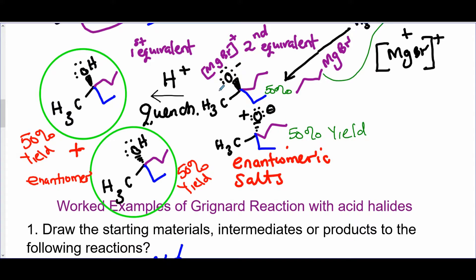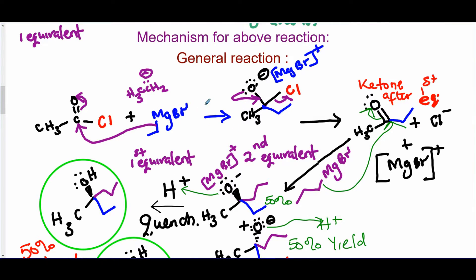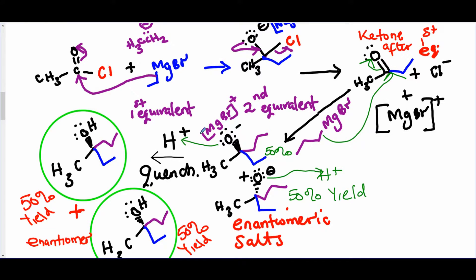And so you get enantiomers of salts. Now what's left is to get rid of the negative charge, and we simply quench by attacking H+. You can quench by attacking the H+, the acidic proton with the O-, using one lone pair of the O-, and here attacking the acidic proton using the lone pair of the O-. So you're going to get the two enantiomers again here as racemic mixtures. 50% yield of that, 50% yield of that.